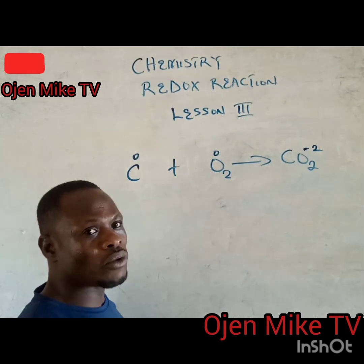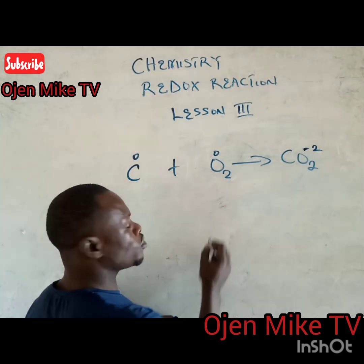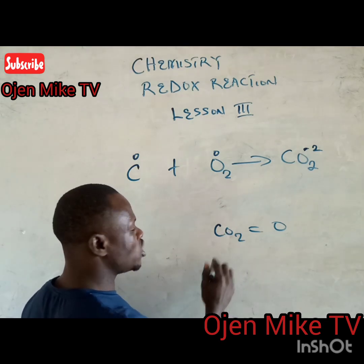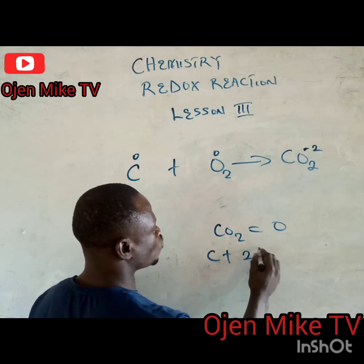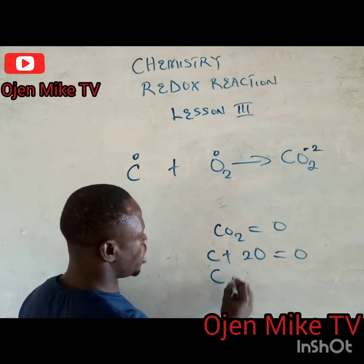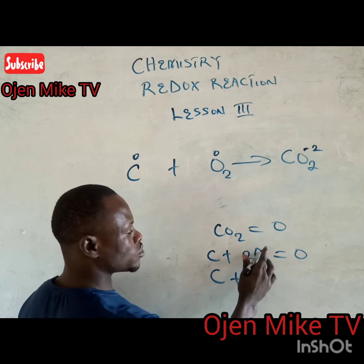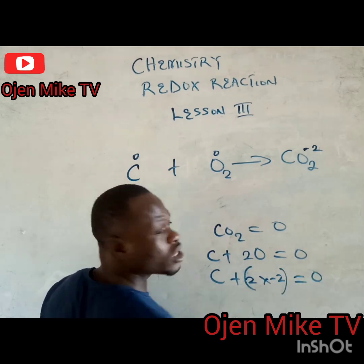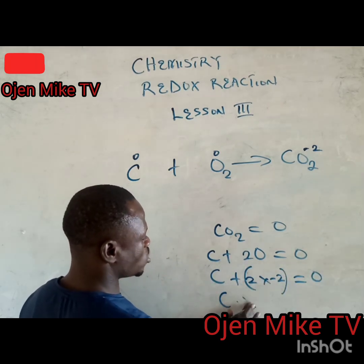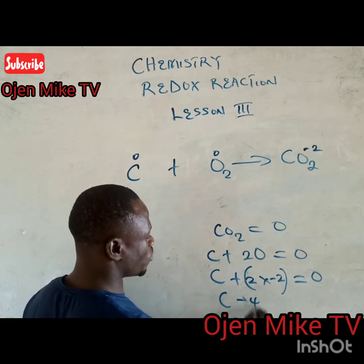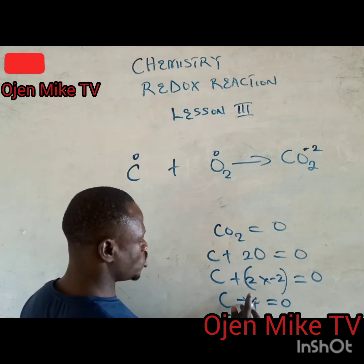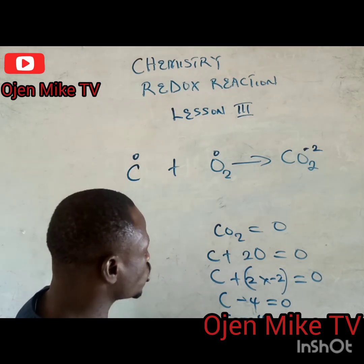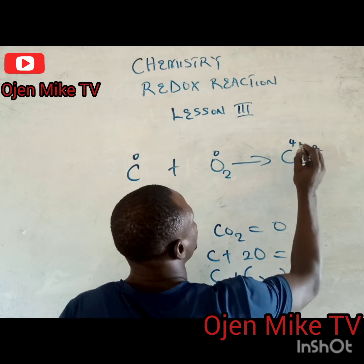Now, what is the oxidation number of carbon in CO₂? We say that for any neutral compound, the sum of oxidation numbers equals zero. So: C + 2O = 0. C + (2 × −2) = 0, which gives C + (−4) = 0, so C = +4. The oxidation number of carbon here is plus four.